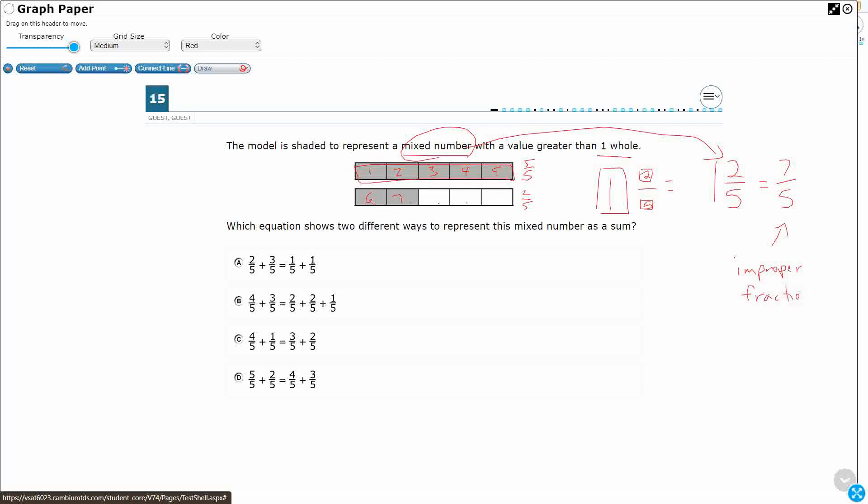Alright. So now that we're looking for one and two fifths or seven fifths, let's look at our options here. Alright. So what we're really going to do here is we are just going to take a look at what we're adding here.